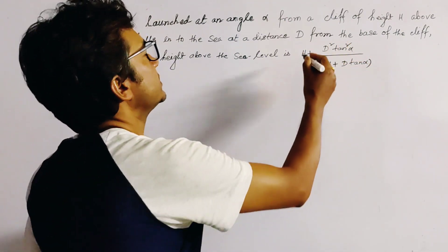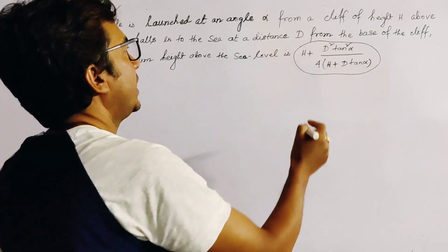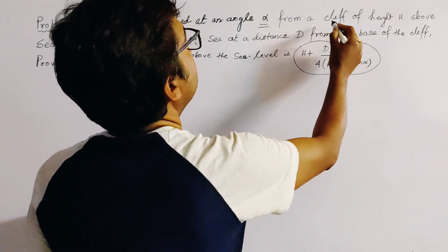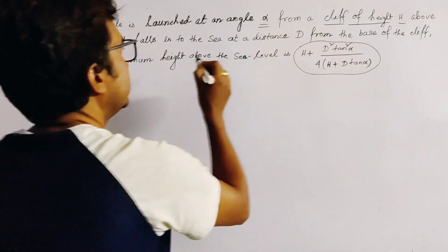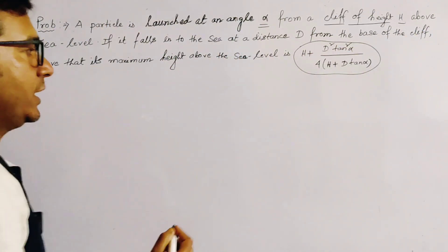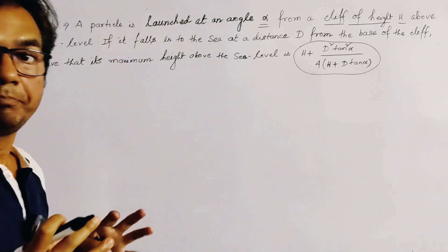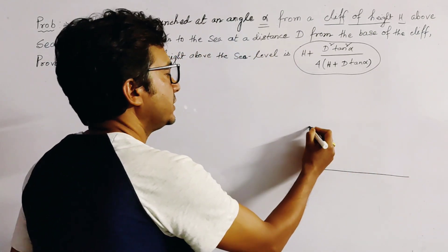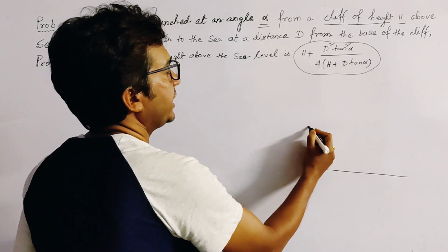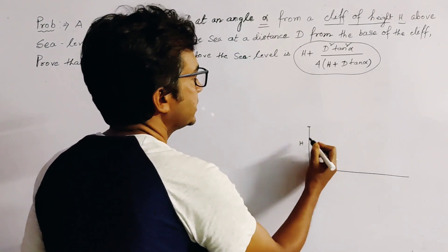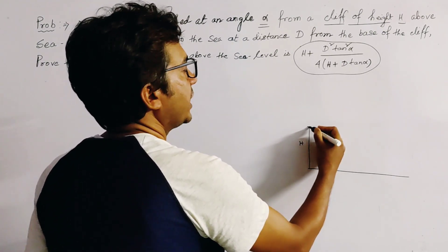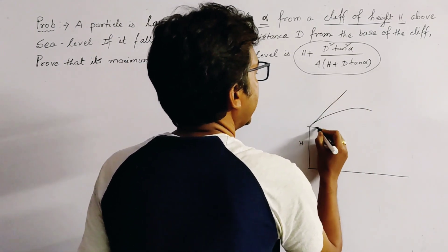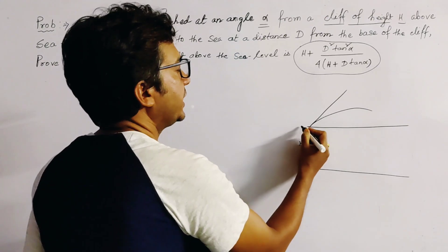It is given that the angle of projection is alpha and it is projected from a cliff of height H above sea level. We first draw a rough picture of this problem. This is the sea level and this is the cliff of height H. We project the particle from the top of the cliff at an angle alpha. We draw a horizontal line from this point and let it be origin O.